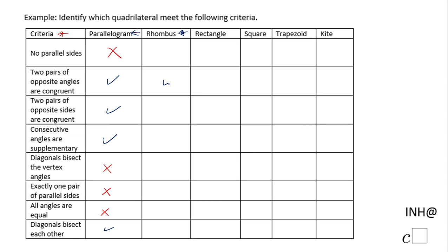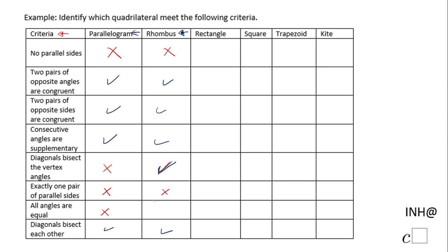Now we move to the rhombus. The rhombus is a special type of parallelogram, so I'll check the properties that already work from the parallelogram. For the remaining ones: 'No parallel sides' — doesn't work. 'Diagonals bisect the vertex angles' — yes, that works for a rhombus. 'Exactly one pair of parallel sides' — no. 'All angles are equal' — no, that doesn't work for a rhombus.